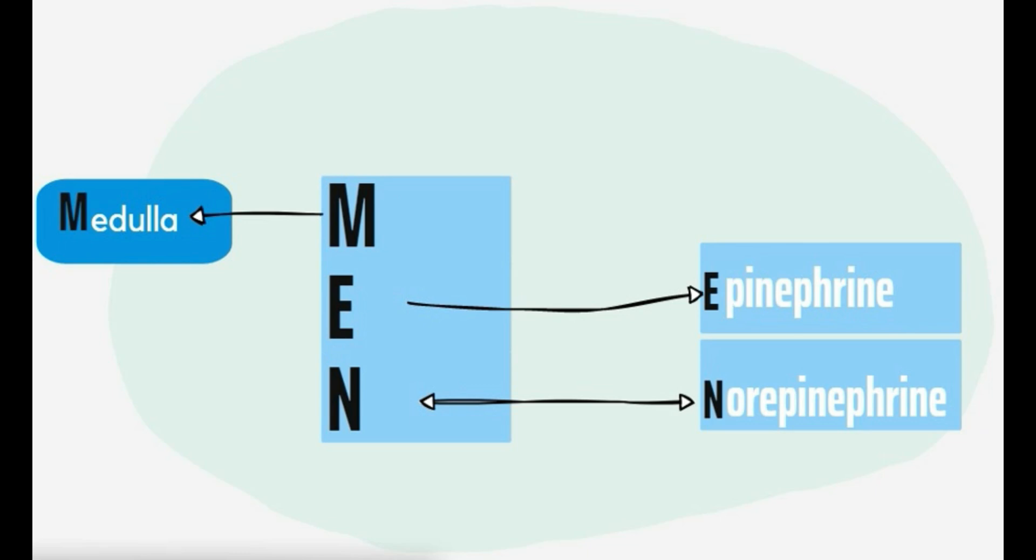All you need to master the adrenal gland anatomy, physiology, and a little bit of histology is to remember the three simple mnemonics: GFR, ACT, and MEN. That was all.